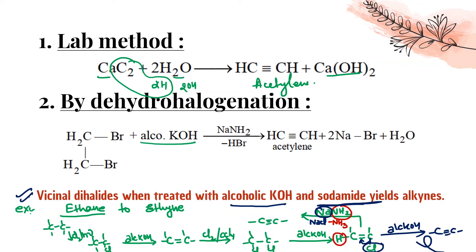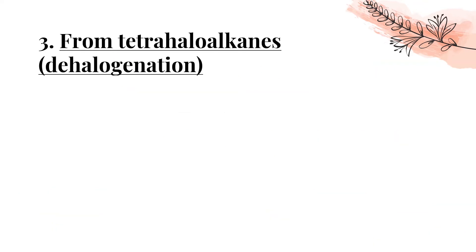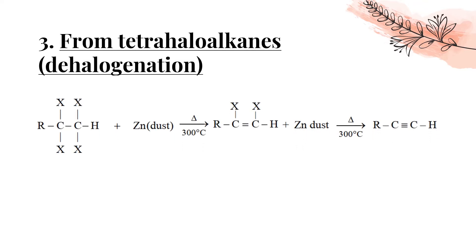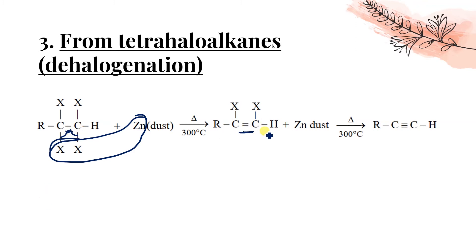Another method is from tetrahalide: dehalogenation using zinc dust. The zinc dust removes X₂ groups — one electron from each side forms a double bond, and then zinc dust again removes another X₂, with one electron from each side forming a triple bond.